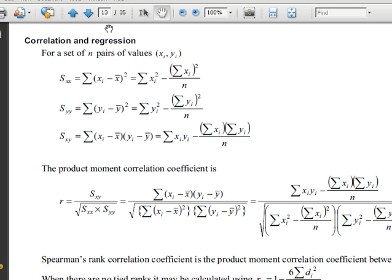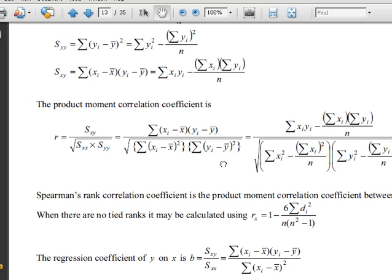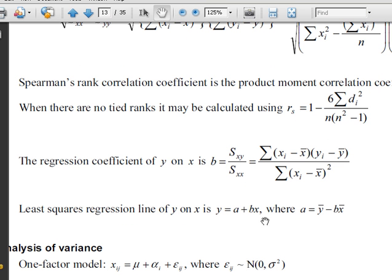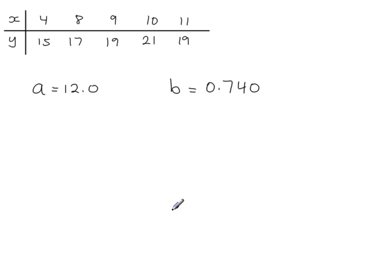In the formula book, go to page 13, correlation and regression. And you will see the least squares regression line of y on x is y equal to a plus bx. This is the equation that we need.